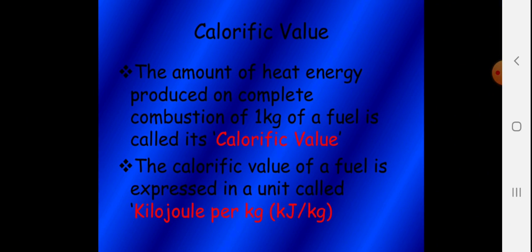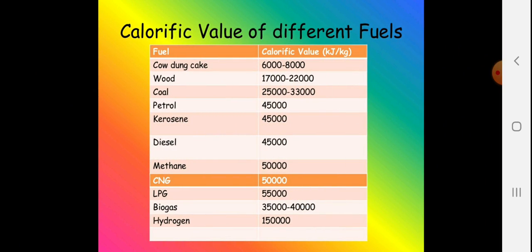Calorific value is the amount of heat energy produced on the complete combustion of 1 kg of fuel, and it is expressed in kilojoules per kg. The highest calorific values belong to biogas at 35,000–40,000, CNG and methane at around 50,000, and diesel, kerosene, and petrol at around 45,000 — these are petroleum products with the highest calorific values. The least calorific value is cow dung cake at 6,000–8,000 kilojoules per kg.